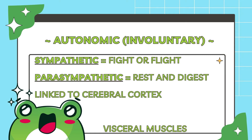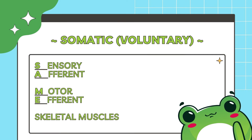The autonomic nervous system is involuntary. We have the sympathetic nervous system, which is fight or flight — it's activated immediately and is stimulated by stresses. The opposite is the parasympathetic nervous system, which is rest or digest. It comes into play after the sympathetic nervous system to bring the body back to normal, which is homeostasis. The autonomic nervous system is linked to the cerebral cortex and controls visceral muscles, organs and glands, which are internal. The somatic nervous system is voluntary. It communicates with sensory organs and is involved in all skeletal muscle activity, which is external.